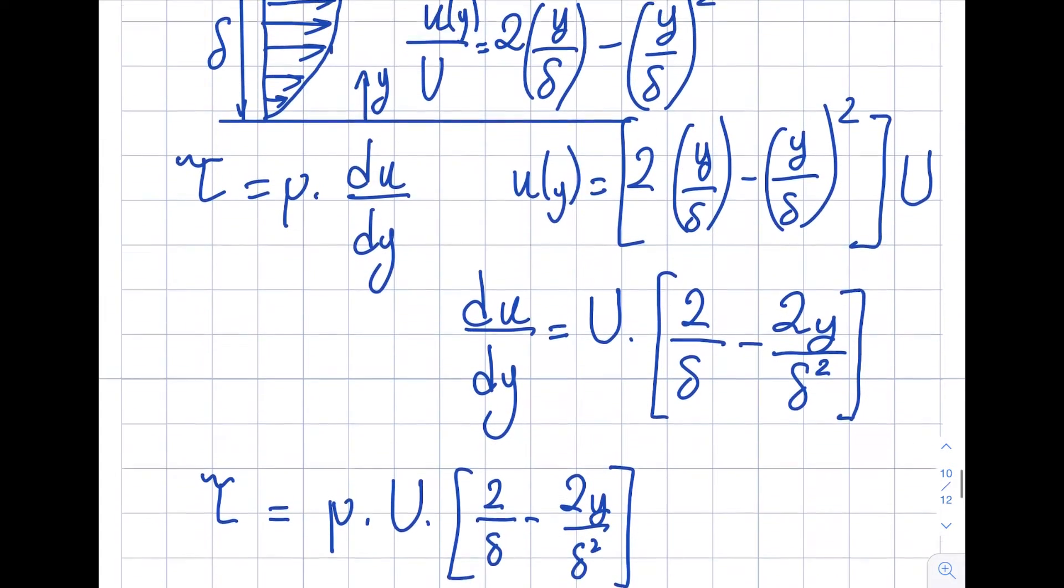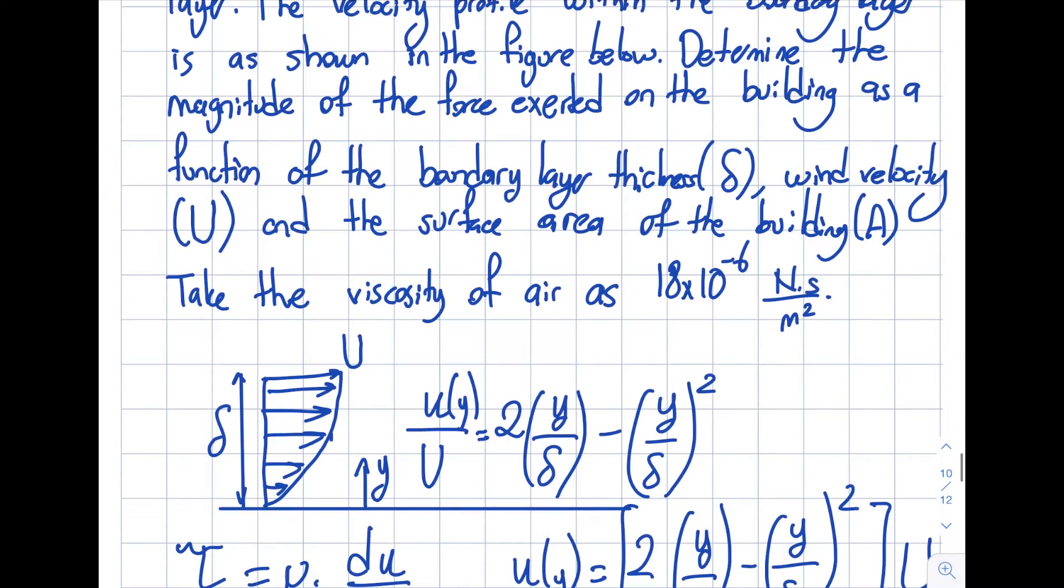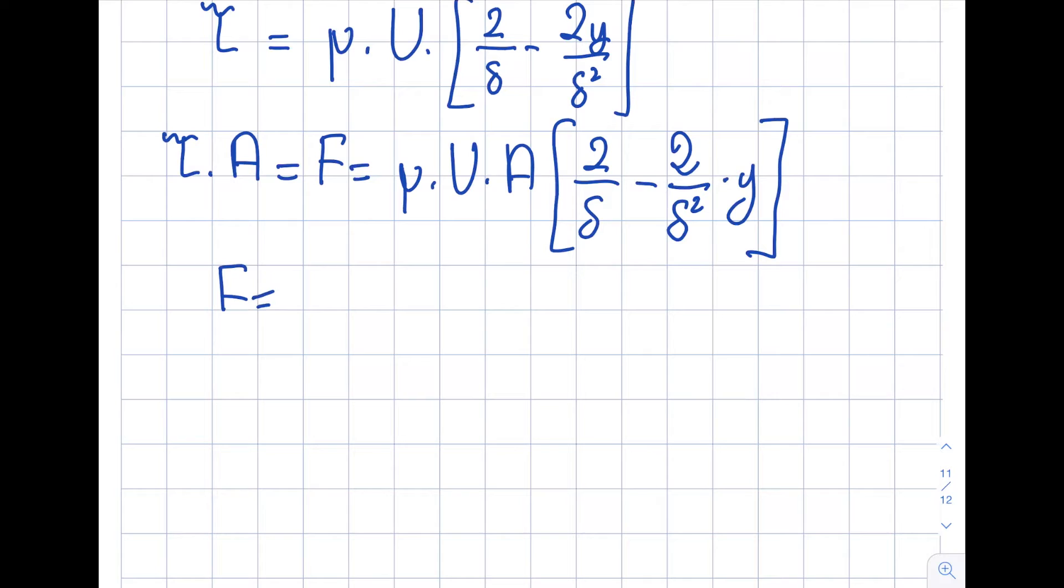Is this my final answer? No, it's not. The question asks to determine the magnitude of the force exerted on the building. The building is defined as y equals 0. The origin is defined where velocity is zero. If I plug y equals zero in the velocity equation, velocity will be zero, so that makes sense.